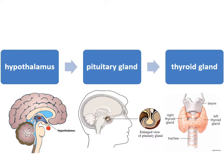So the hypothalamus sends a message to the pituitary gland, which sends a message to the thyroid gland. For these arrows in the diagram, draw this chart in your book and label the messages going from one to the next.